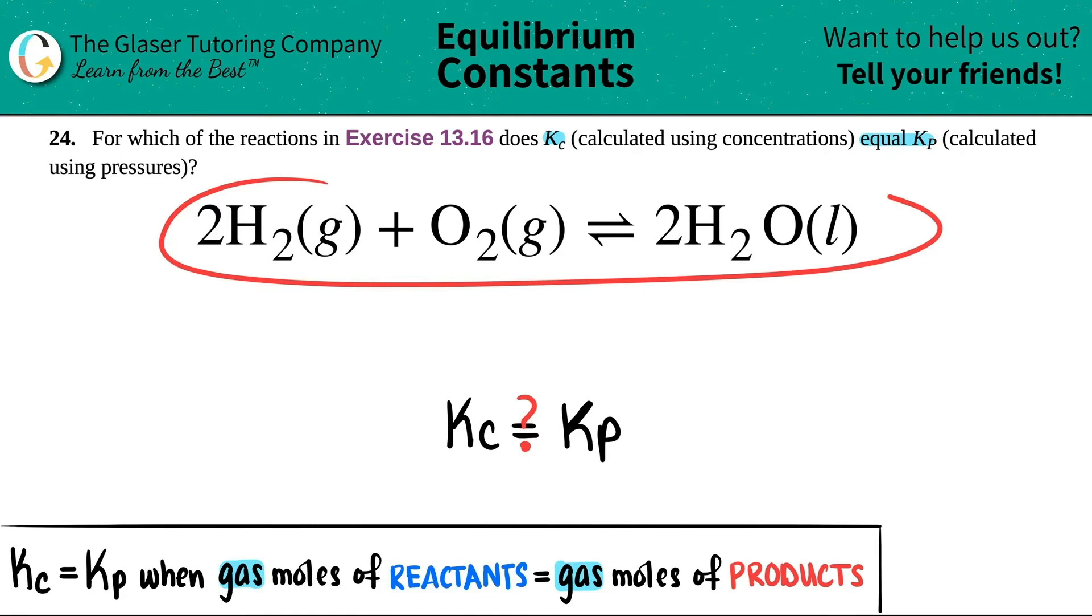So notice how, in a balanced equation, we only care about gases, because gases are the only states or phases that can be expressed in both concentration and pressure values. So just look for your gases. In here, I got a gas. I got a gas, but uh-oh, this is a liquid. Can I count this guy? Absolutely not. So cross out the liquid.